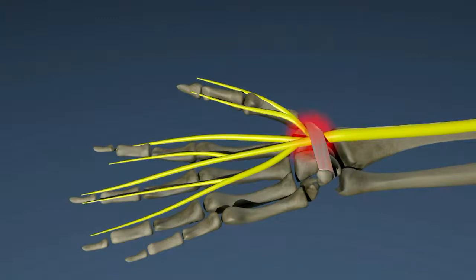The median nerve branches out to supply the thumb, index finger, middle finger, and half of the ring finger with sensation. Symptoms that occur in this pattern are suspicious for carpal tunnel syndrome.